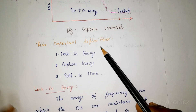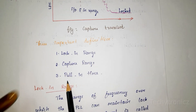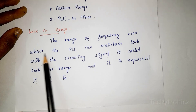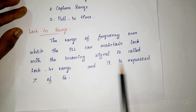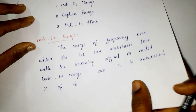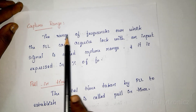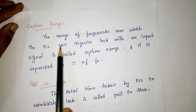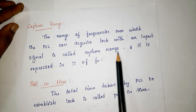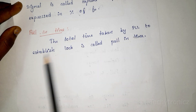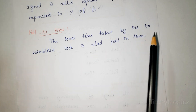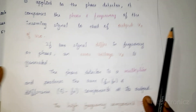There are three important definitions: lock-in range, capture range, and pull-in time. Lock-in range is the range of frequencies over which the PLL can maintain lock with the incoming signal, expressed as a percentage of F0. Capture range is the range of frequencies over which the PLL can acquire lock with an input signal, also expressed as a percentage of F0. Pull-in time is the total time taken by the PLL to establish lock.